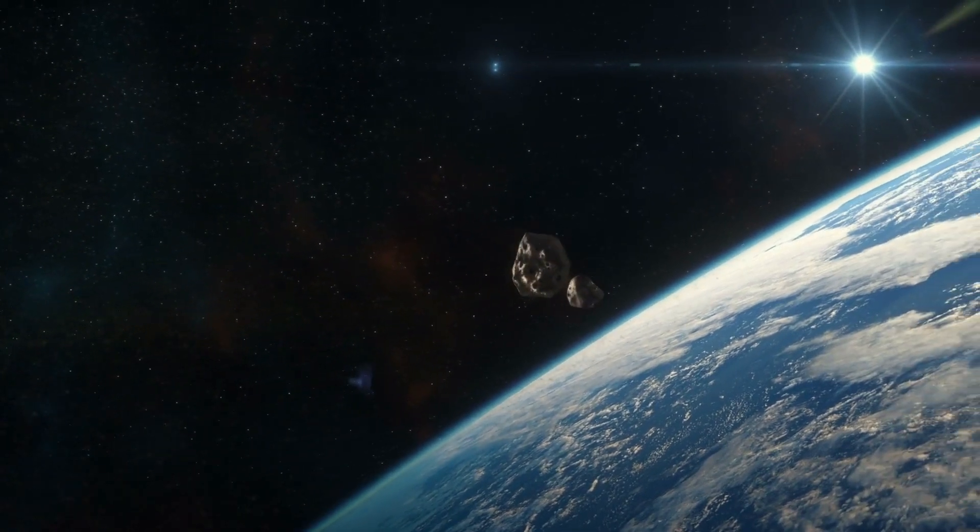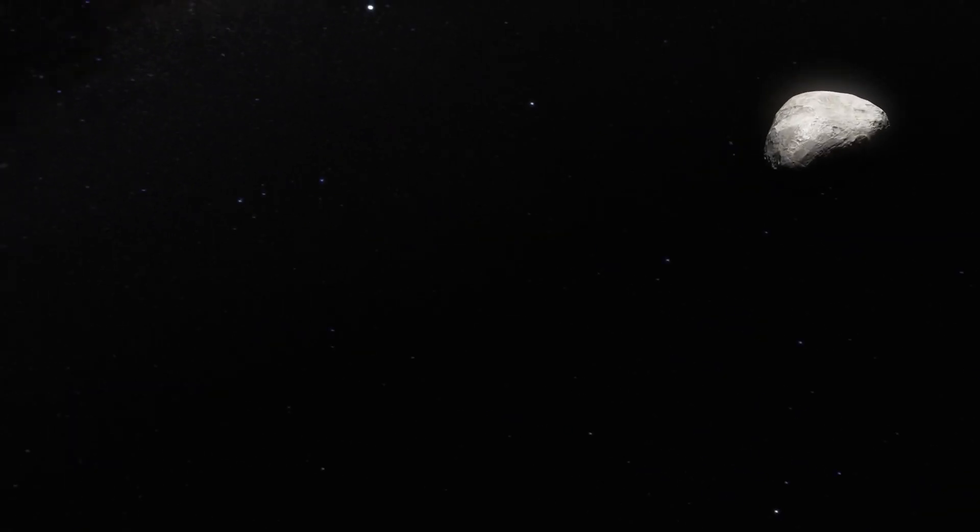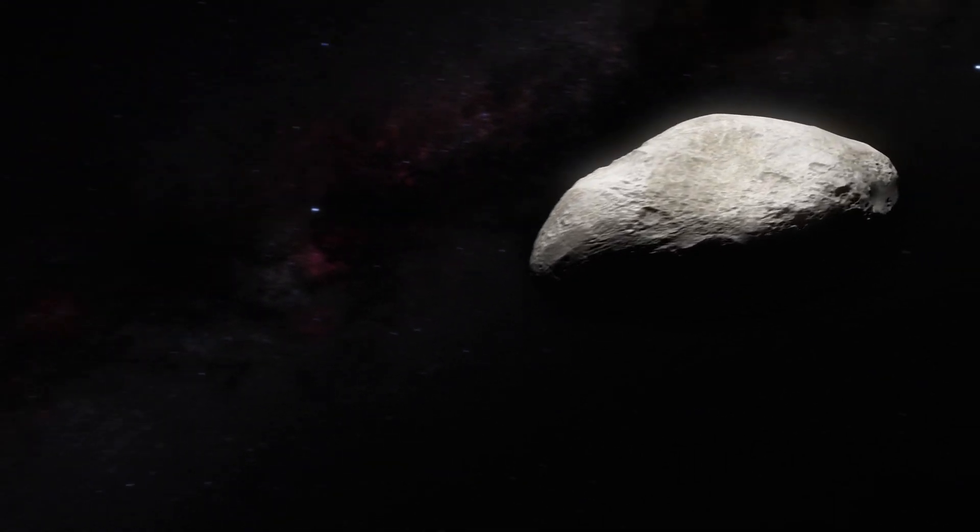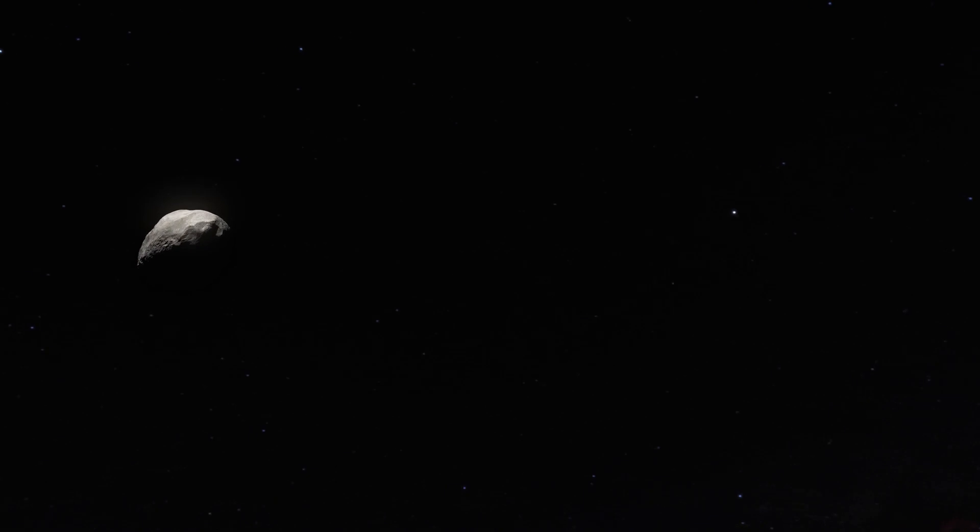Near-Earth objects are asteroids and comets whose orbits come close to that of Earth. These objects have a realistic chance of hitting Earth and causing some damage.